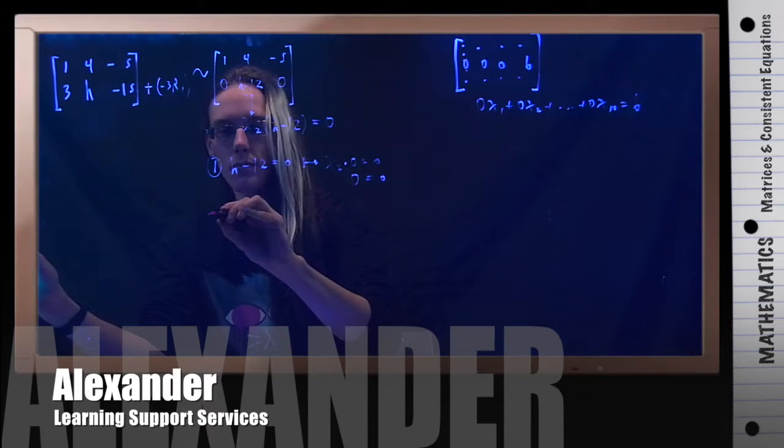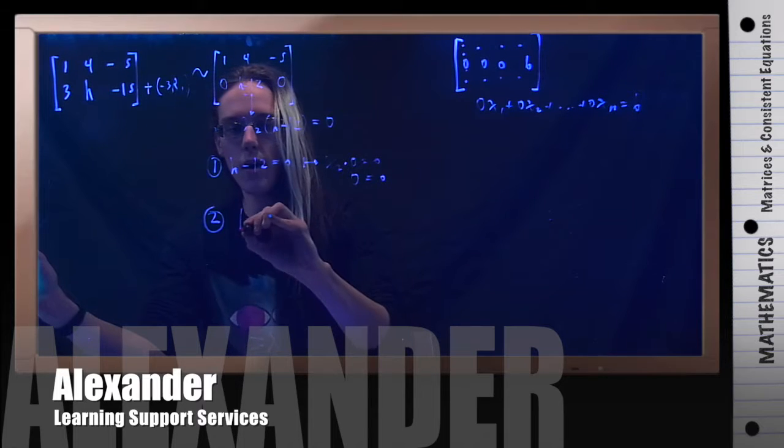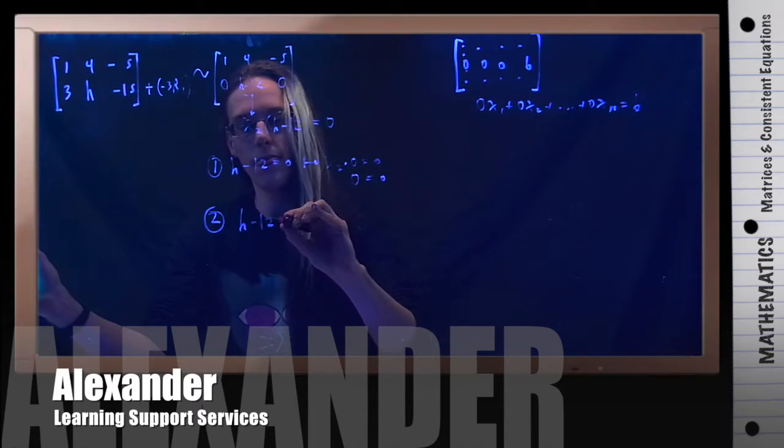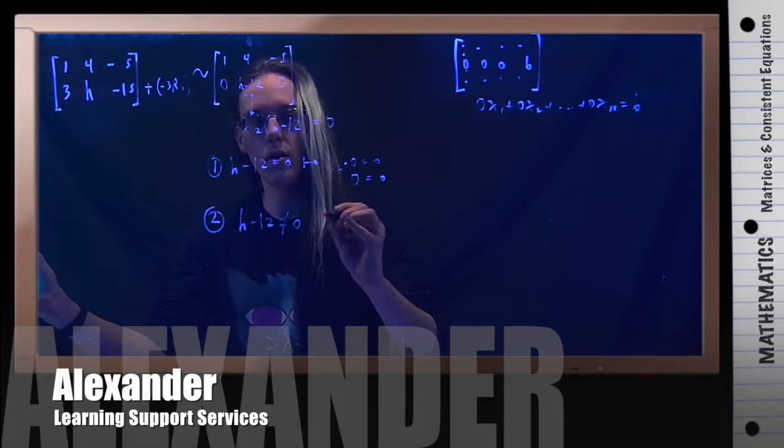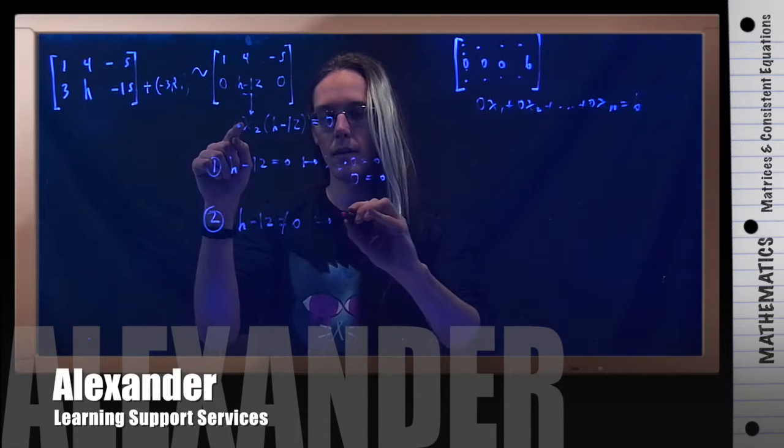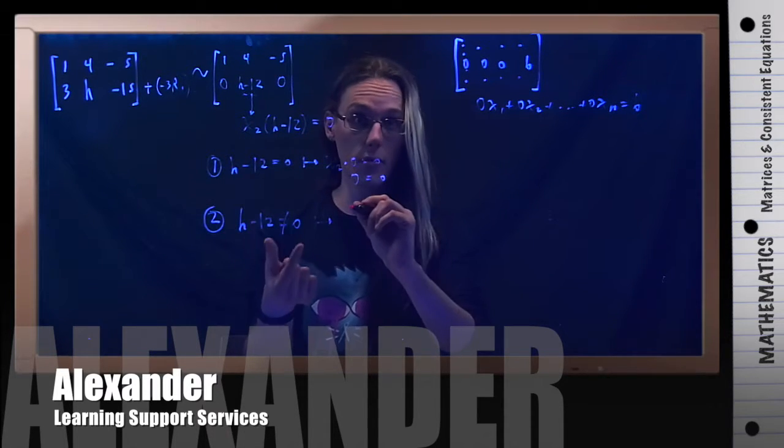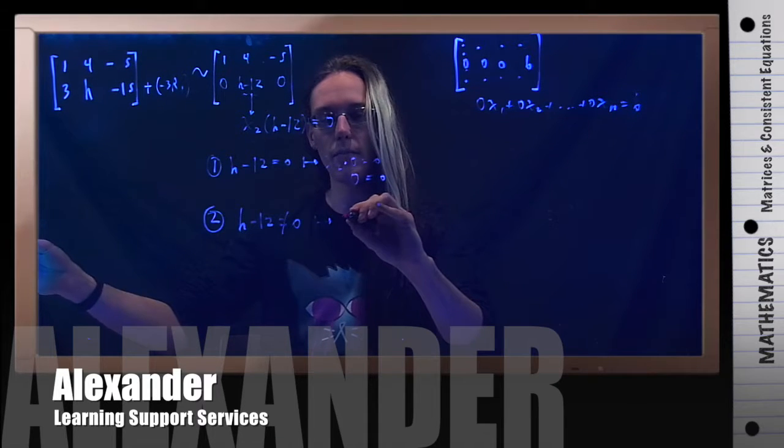Well, case 2, what if h minus 12 does not equal 0? Well, then I have this right here. But if h minus 12 is not 0, then it is safe to divide by it.